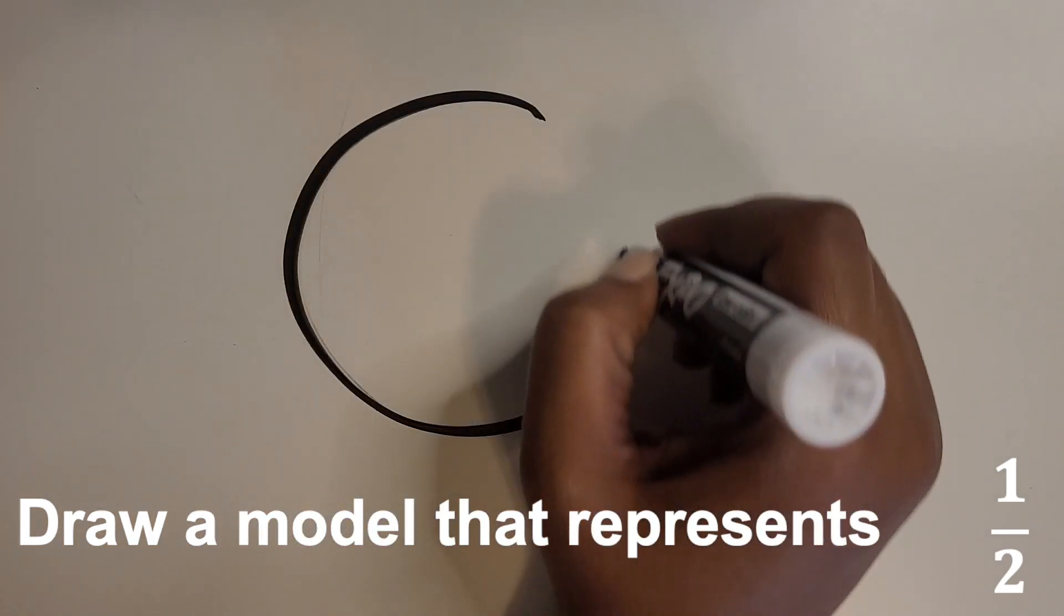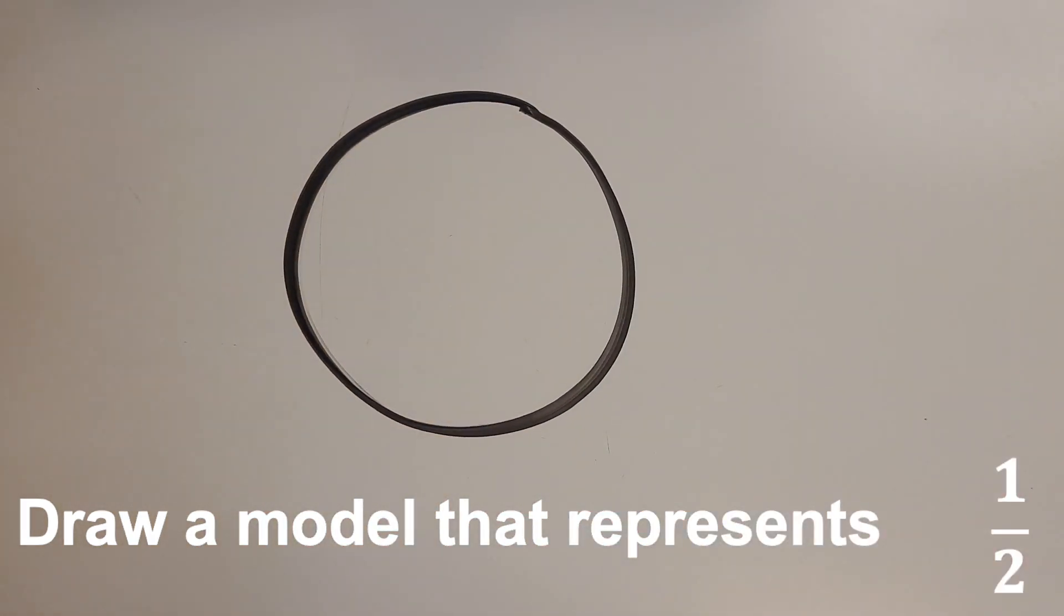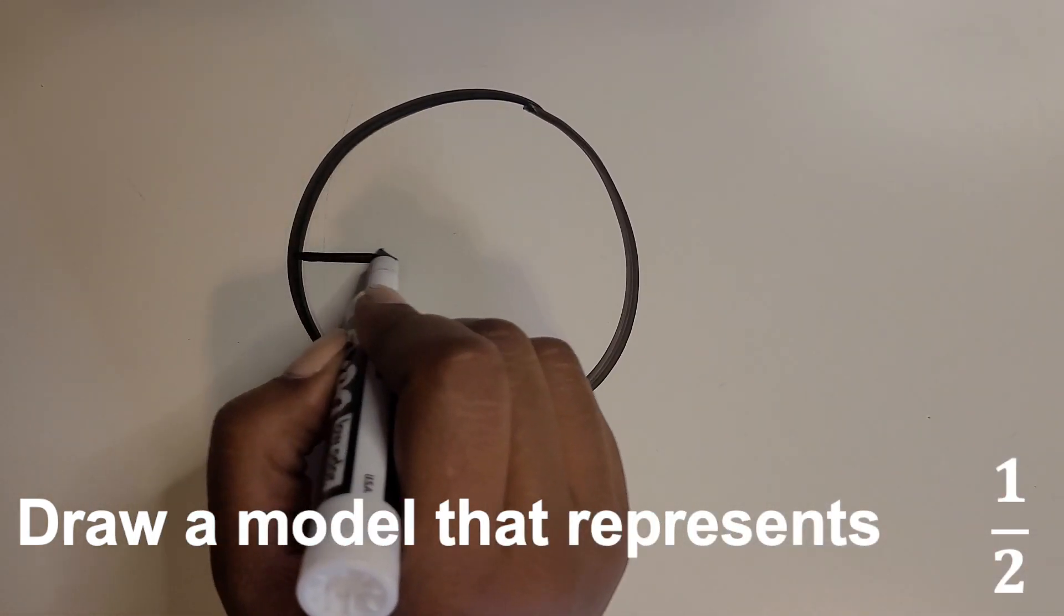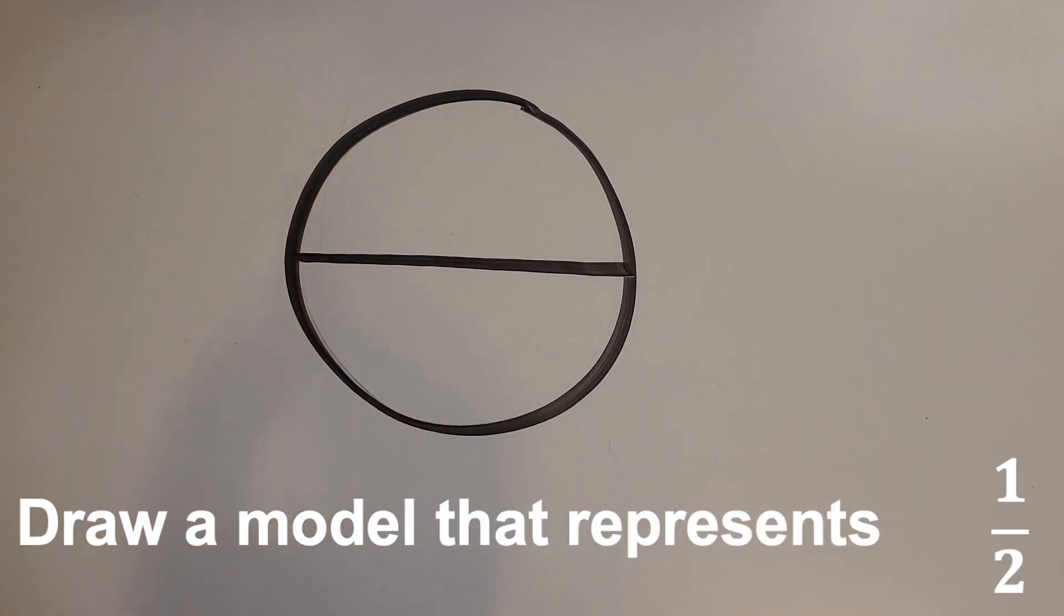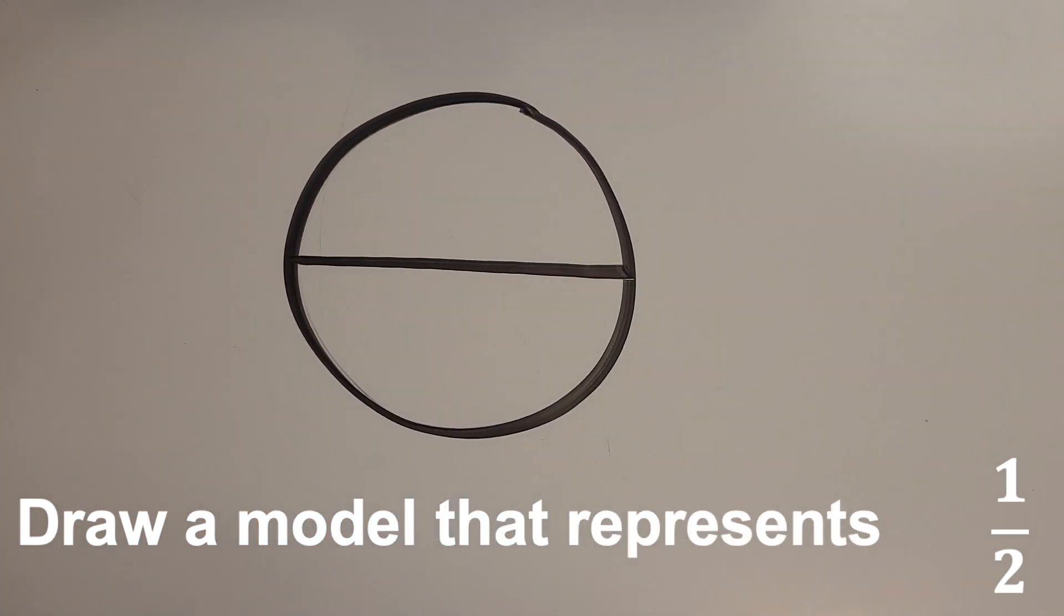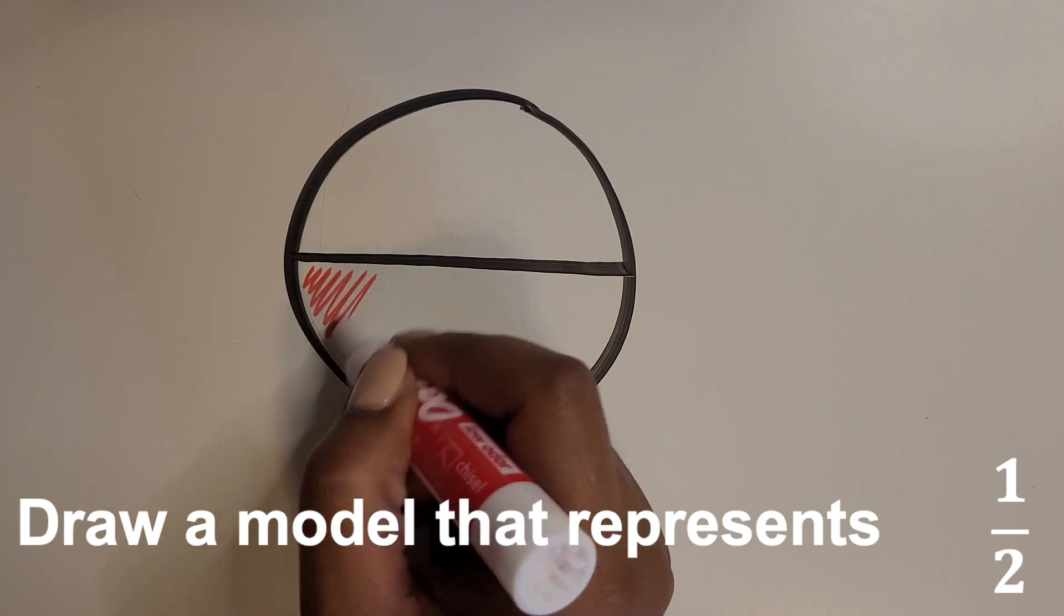Another way to represent one half is to draw a line going across horizontally. And then again, shade in the top or the bottom part to represent one half.